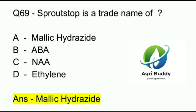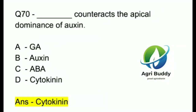Question 69. Sprout stop is a trade name of? A. Maleic hydrazide. B. ABA. C. NAA. D. Ethylene. And the answer is Maleic hydrazide.